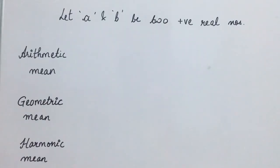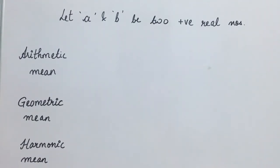After understanding what is the harmonic progression, let us study what are the different means. Let us consider here that A and B are two positive real numbers.